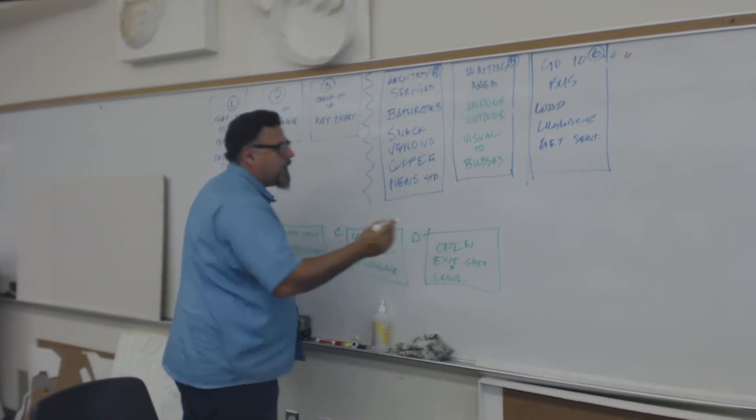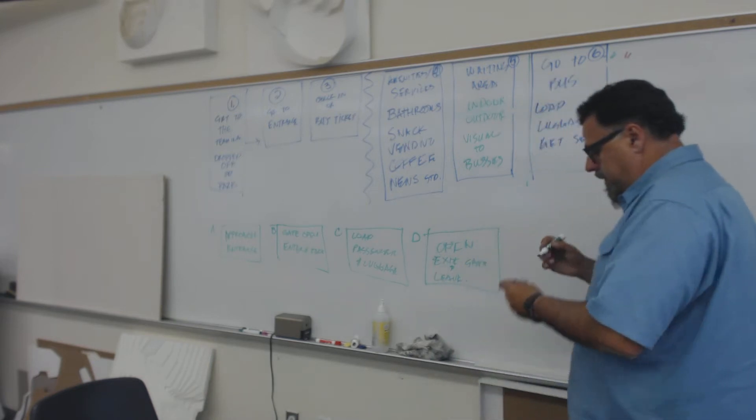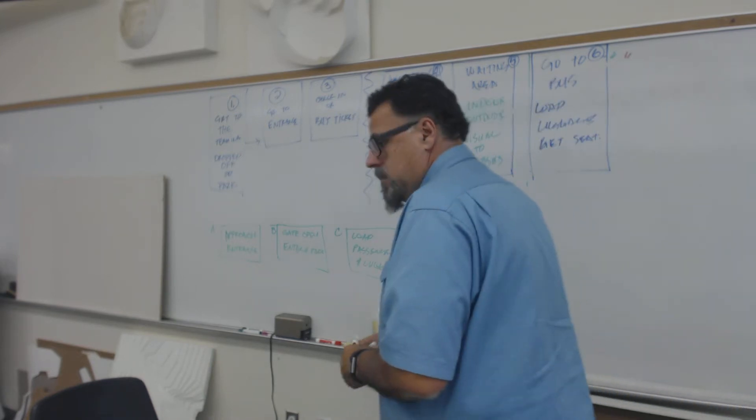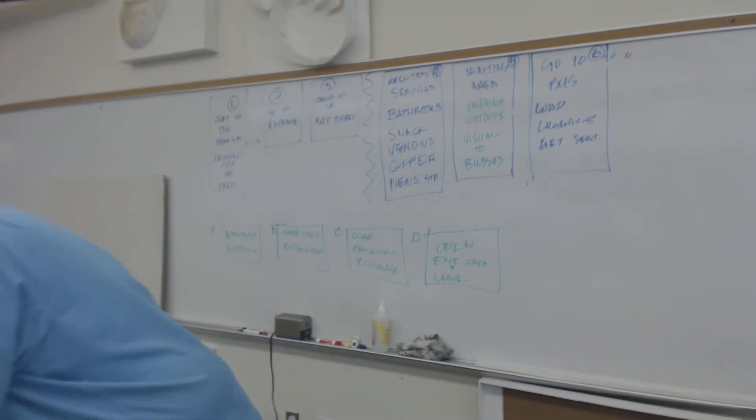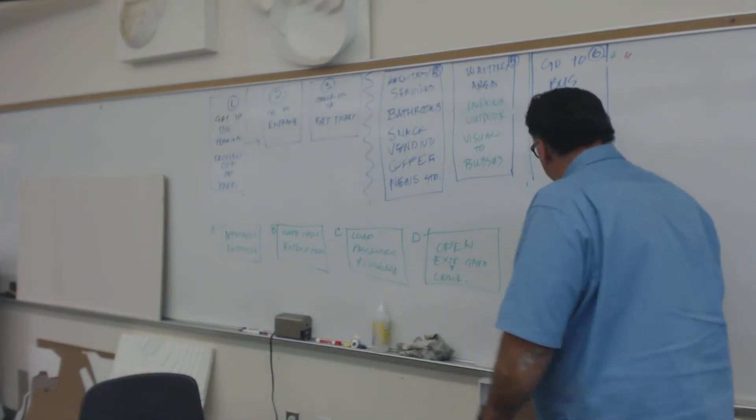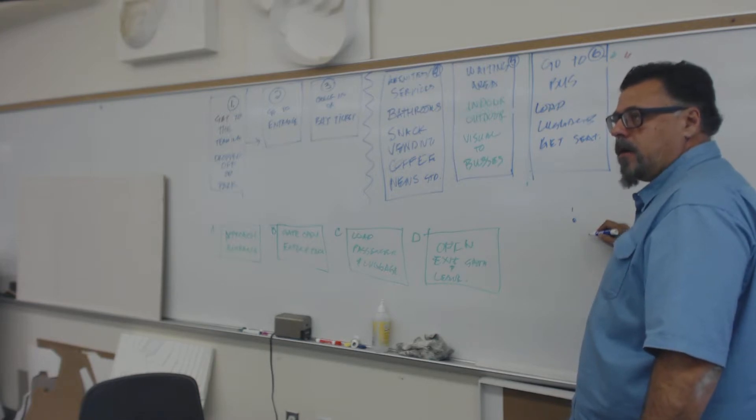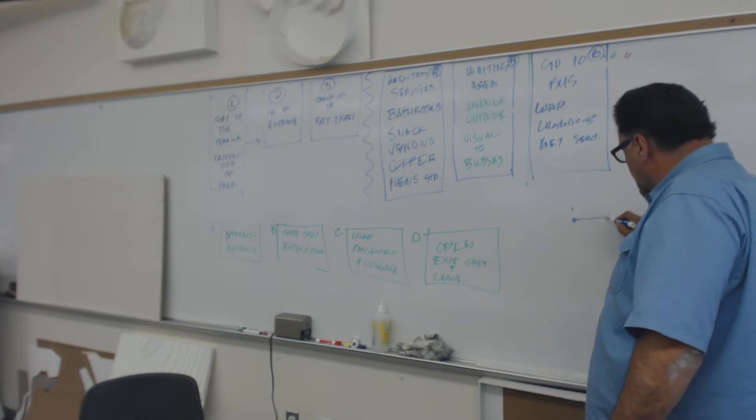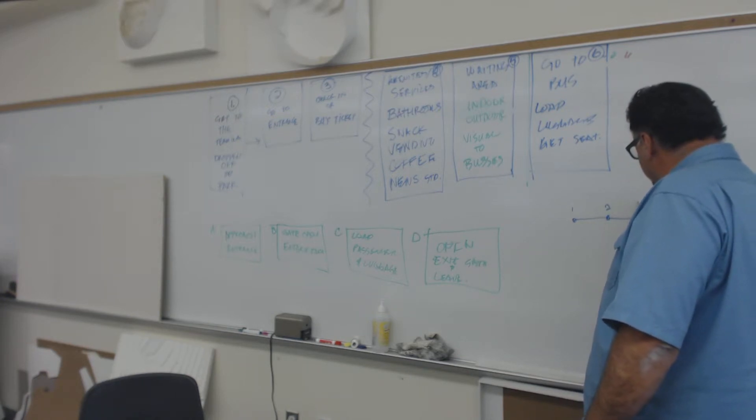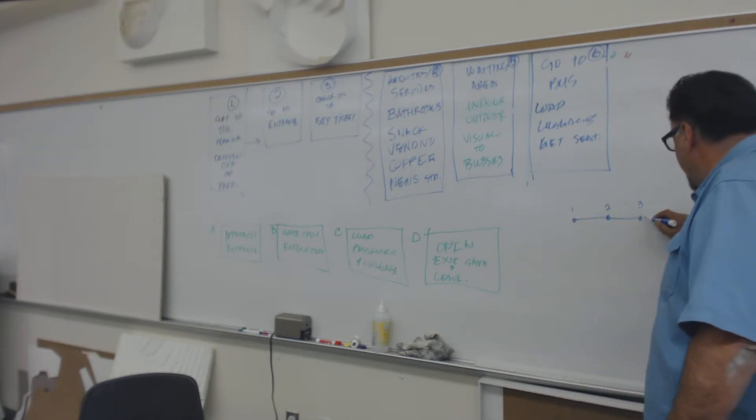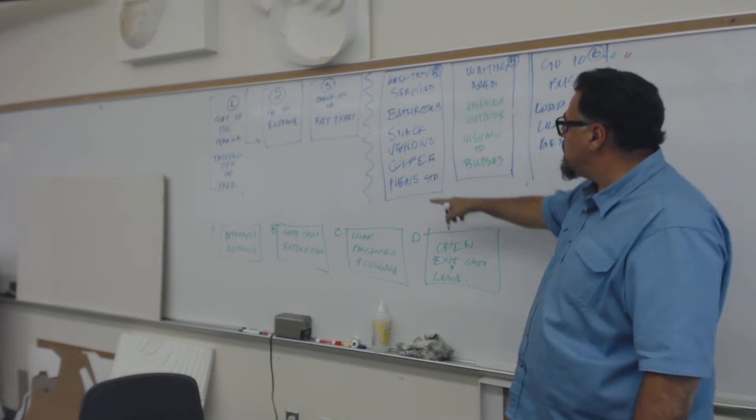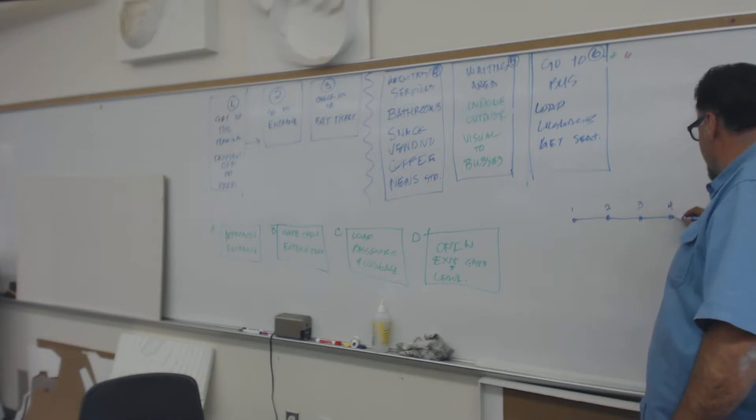So what we end up with is this scenario where we have step one, enter the parking area or get dropped off. Step two, go to the entrance. Step three, get your ticket. Step four, go past the amenities, the vending area. Step five, go to the waiting area, indoor or outdoor.